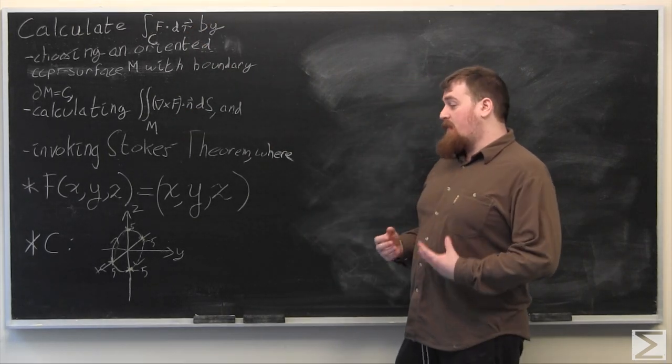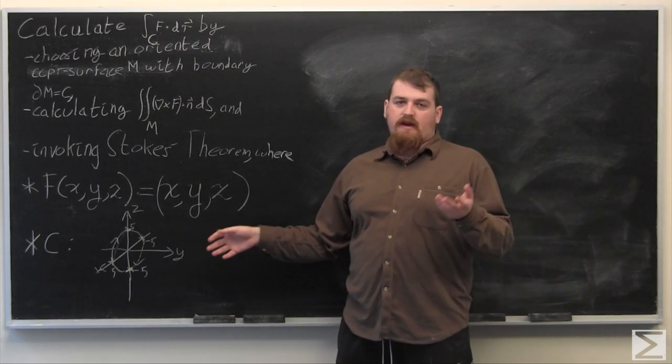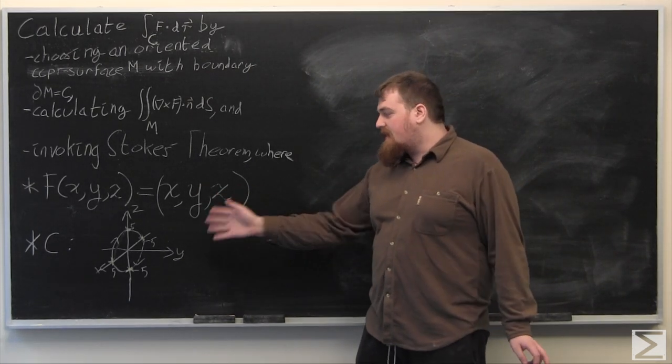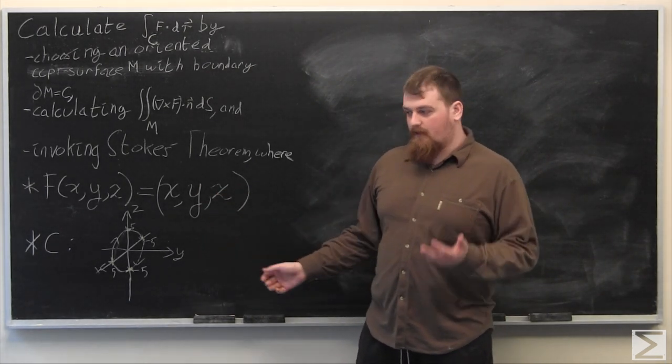So first we need to pick our m, because this is a circle, obviously the m we want to pick is going to be the disk in the x, z plane of radius 5 around the origin.